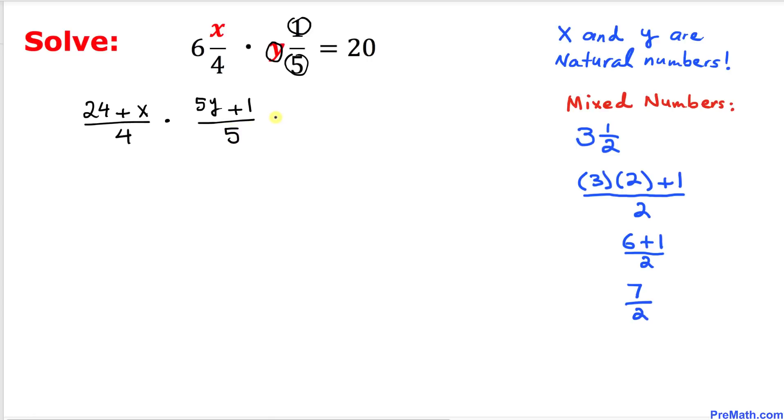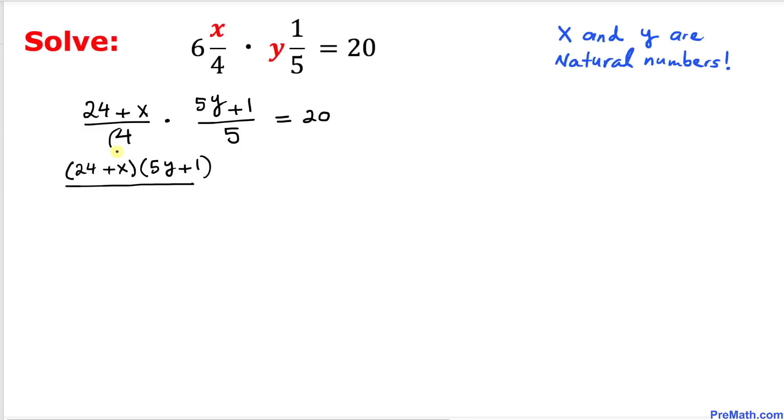And now let's go ahead and multiply these numerators. I can write 24 plus x, times 5y plus 1, divided by 4 times 5 is going to give us 20, equals to 20 on the right hand side.